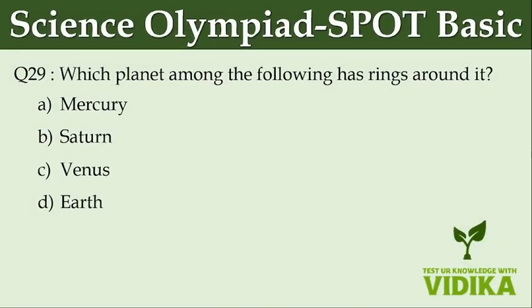Which planet among the following has rings around it? Option A: Mercury. Option B: Saturn. Option C: Venus. Option D: (not captured).